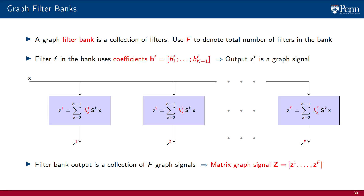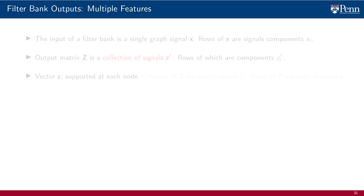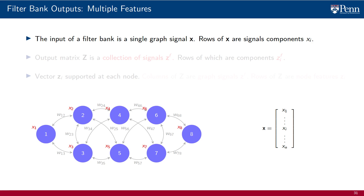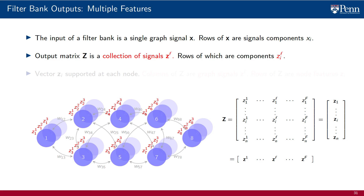We write these signals as the matrix graph signal capital Z, in which each of the columns of the matrix Z is a graph signal. This matrix graph signal is a new object. The input of a filter bank is a regular graph signal; each row of the vector x is a component x_i associated with node i. The output Z is a collection of graph signals z^f, whose components z_if are associated with nodes of the graph. Each node now supports multiple values — the output of the filter bank is like a book with several pages, where each page is a graph signal.